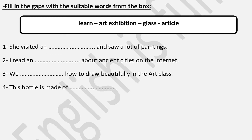Fill in the gaps again using words from the box: learn, art, exhibition, glass, and article. Number two: 'I read ___ about ancient cities.' Answer: an article. 'How to draw beautifully in ___' — it's an art class. Number four: 'This bottle is made of ___.' The only material that fits is glass.